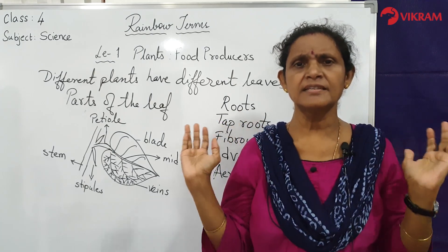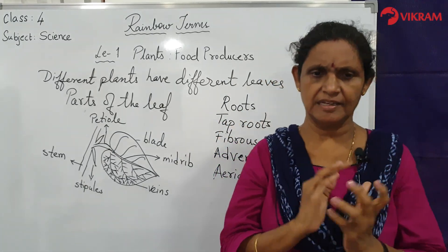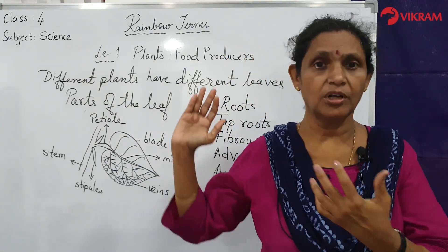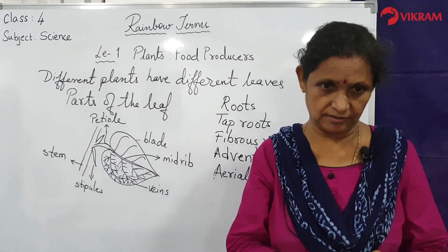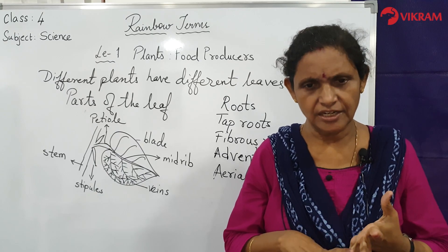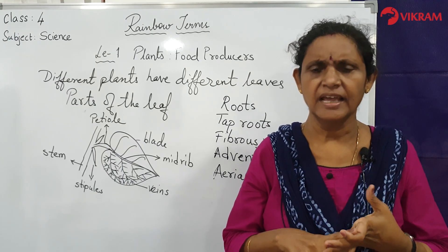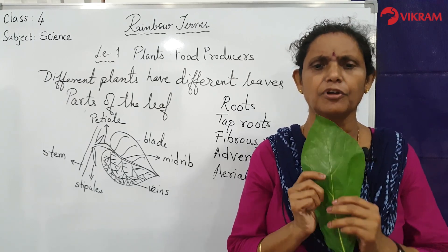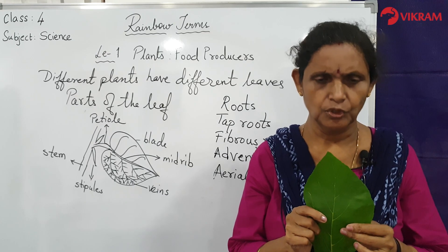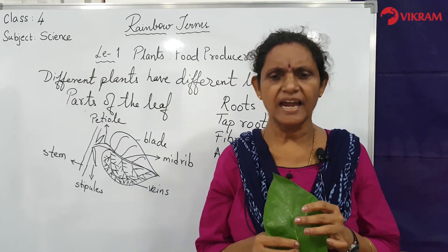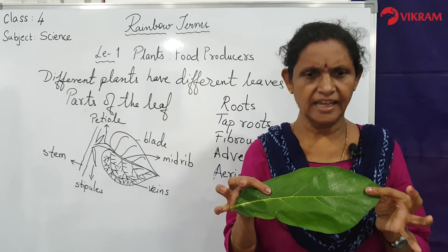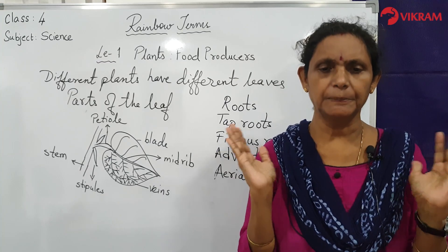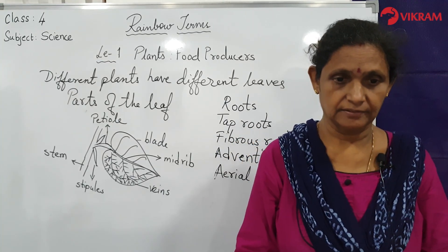So let us wrap up this lesson. What have we learned today? Plants are the most important food producers. Trees give us fresh air, shelter, fuel, medicine, and many other things. Green leaves derive their color from a green pigment called chlorophyll. Photosynthesis is the process by which plants make sugar from sunlight, water, and carbon dioxide. Plants grown by people around their houses are called domestic plants.